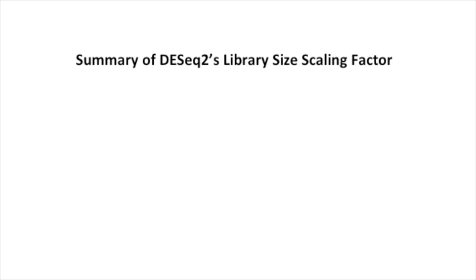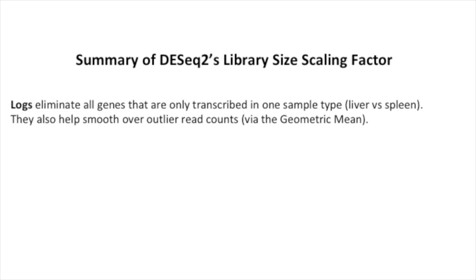Here's a summary of DESeq2's library size scaling factor. Logs eliminate all genes that are only transcribed in one sample type, liver versus spleen. They also help smooth over outlier read counts via the geometric mean.